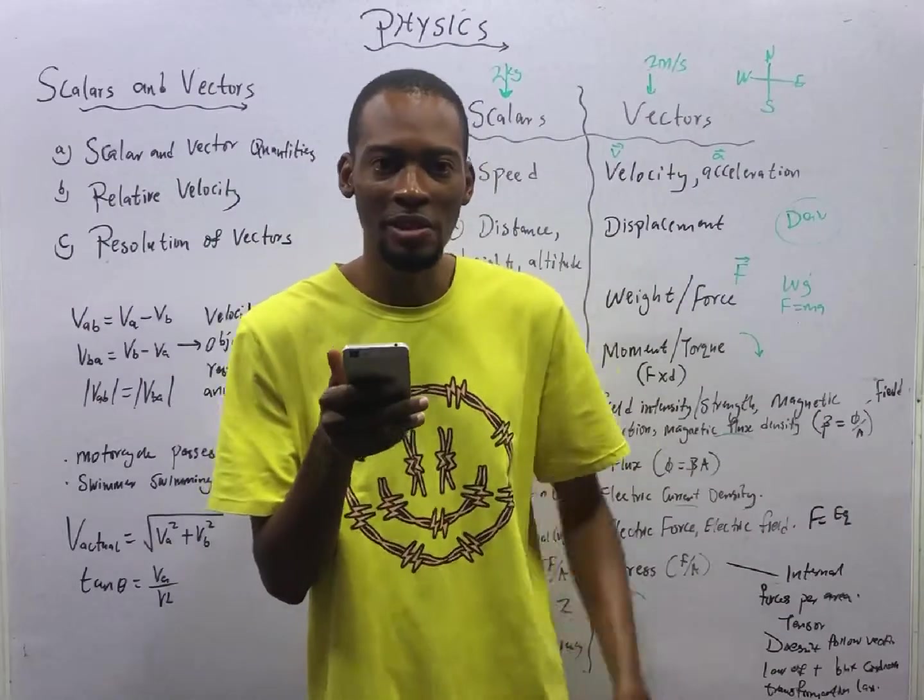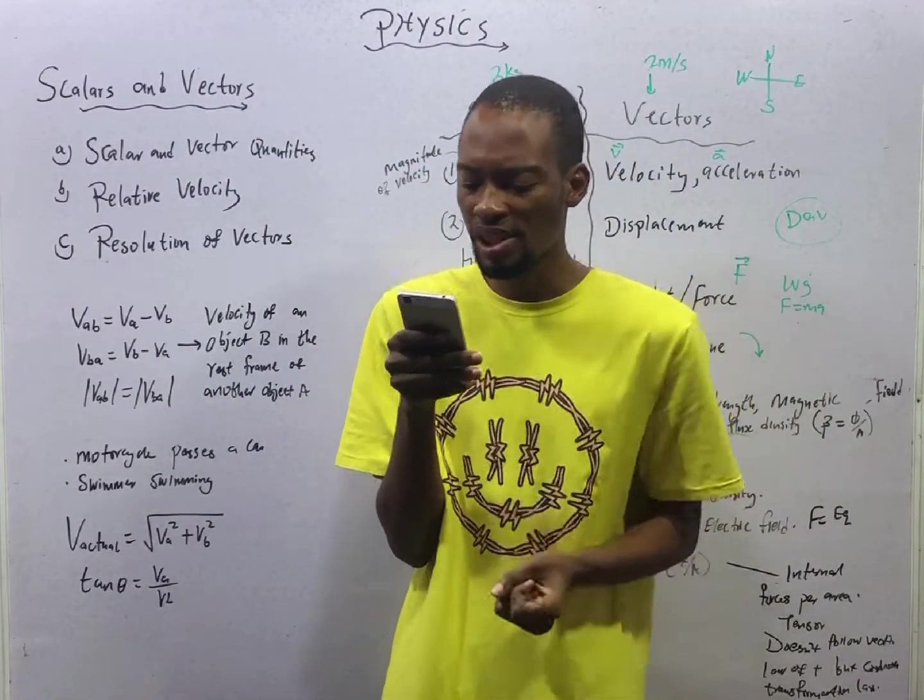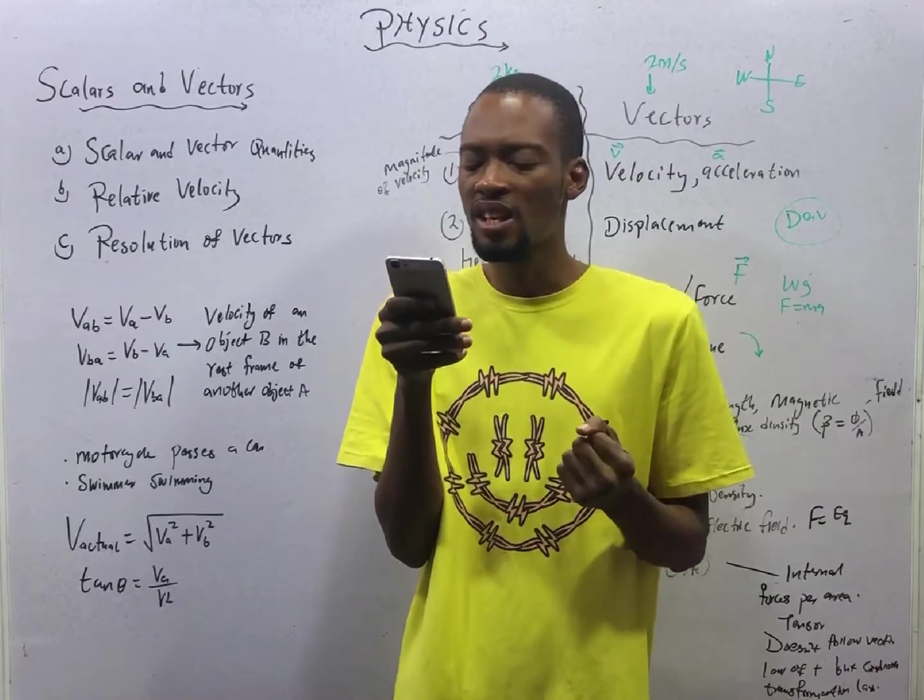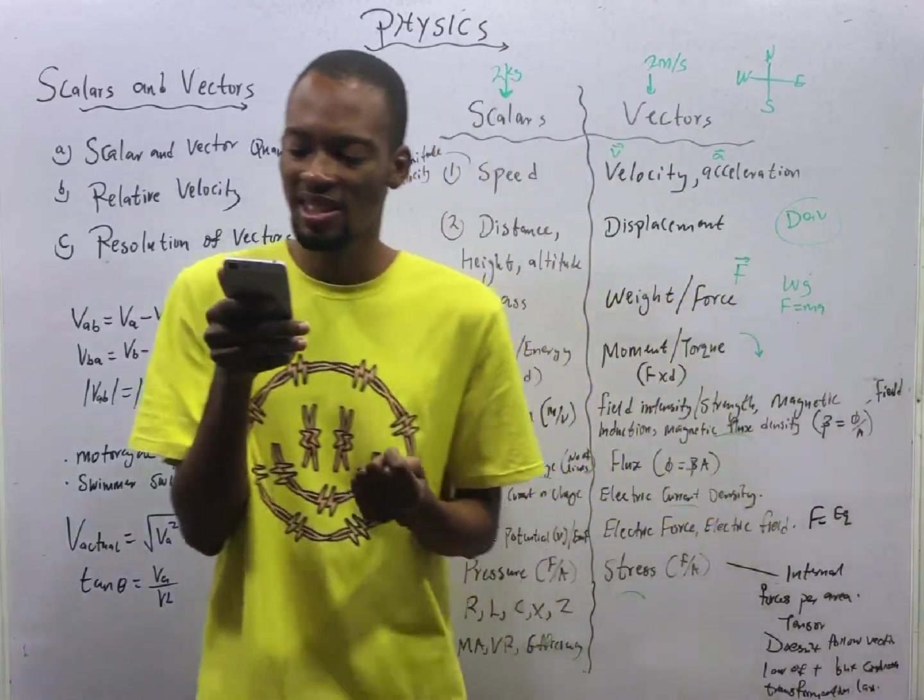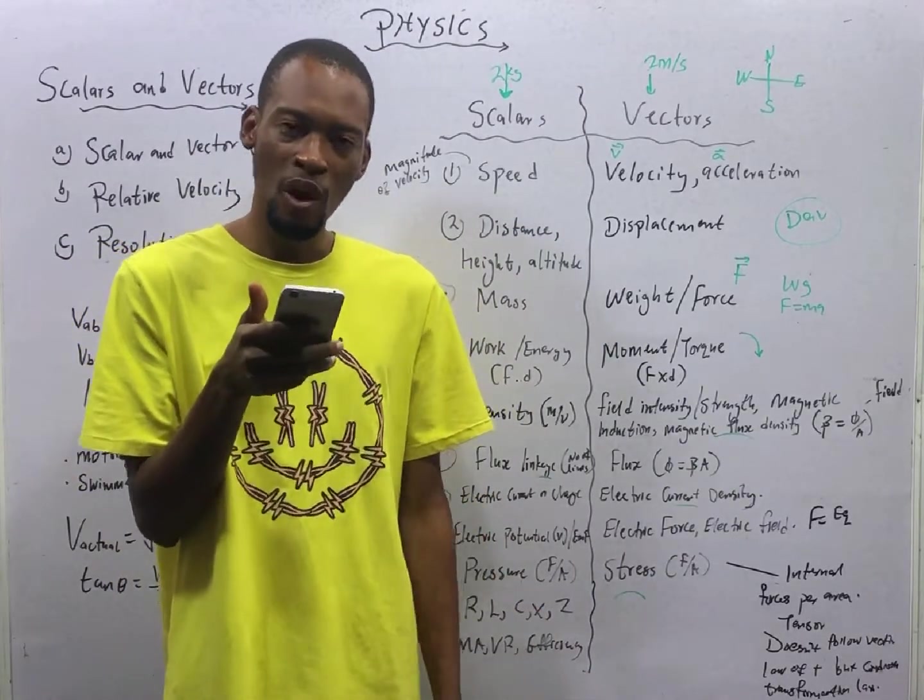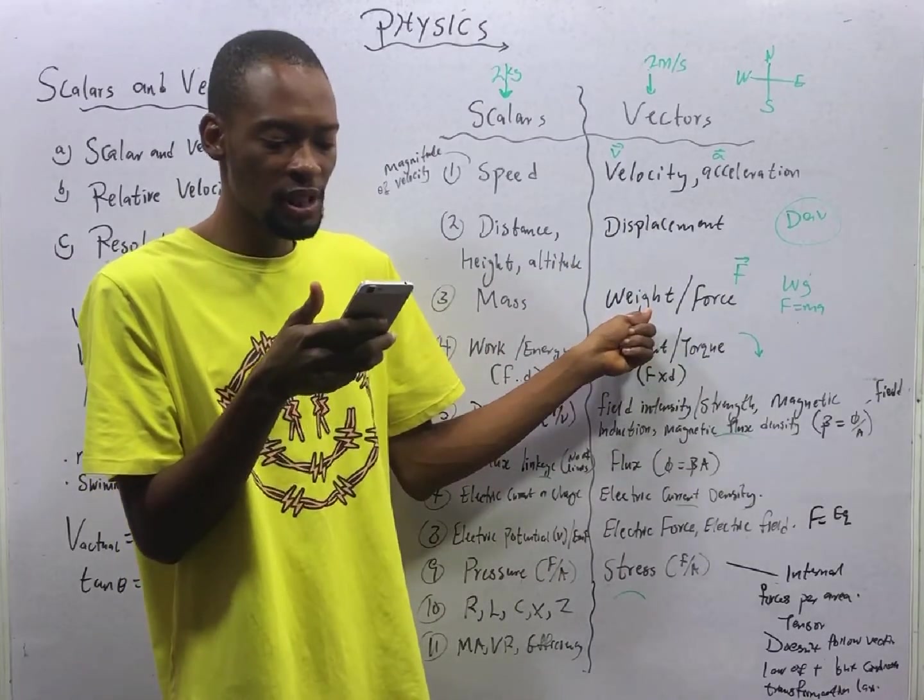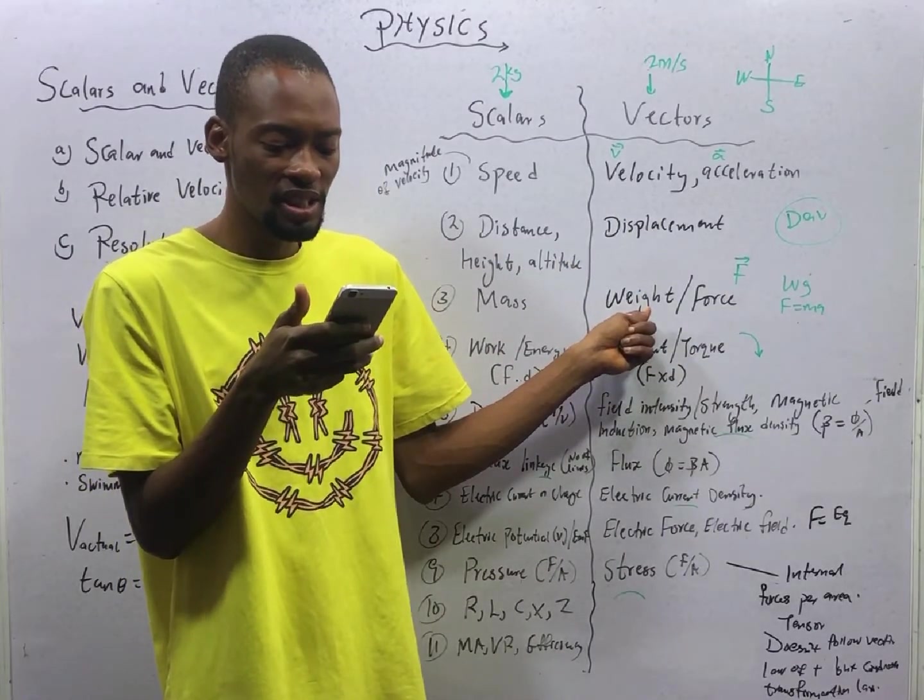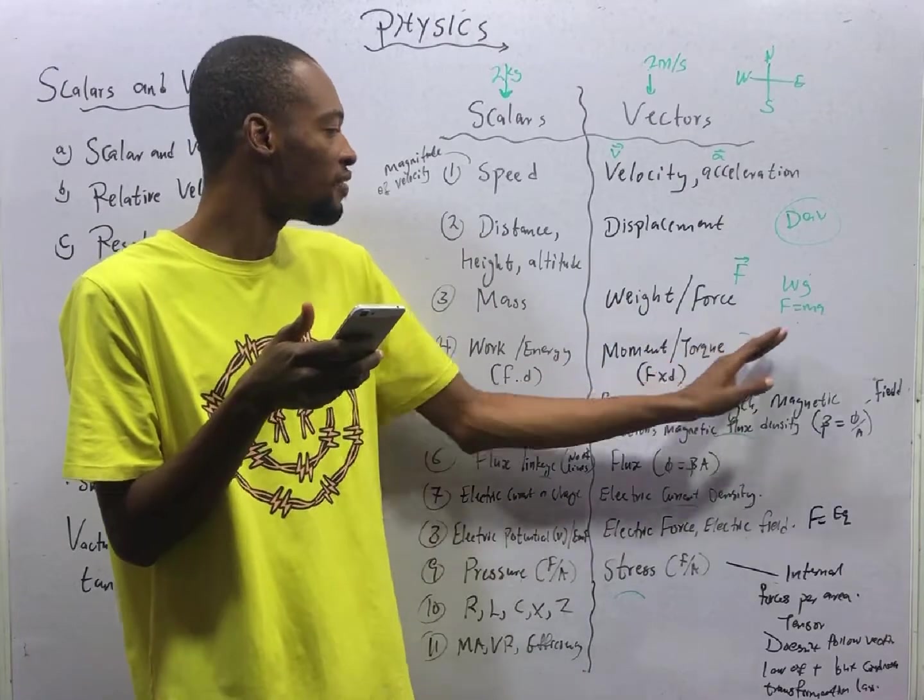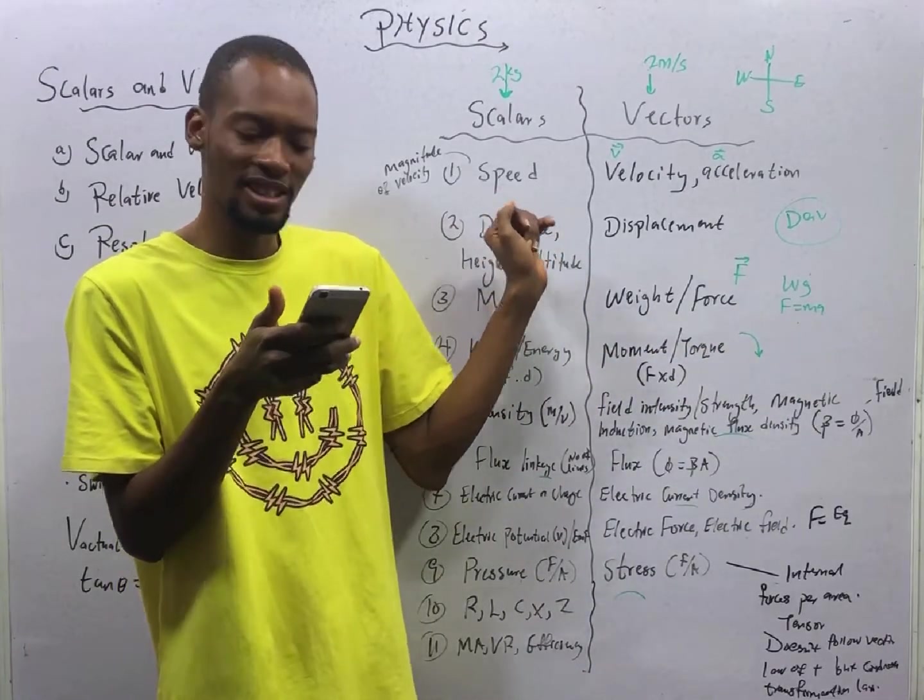Which of the following is not a vector quantity? A. Weight. B. Displacement. C. Altitude. And D. Acceleration. Which of them is not a vector quantity? Weight is a vector quantity. Displacement is a vector quantity. Acceleration is a vector quantity. But altitude, or height, or distance, is a scalar quantity. So option C is the correct option.